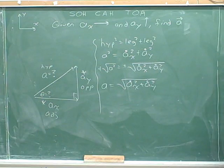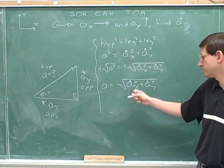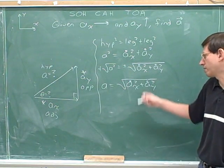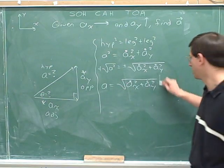So here's an expression for the magnitude of the overall vector, the square root of the magnitude of a sub x squared plus the magnitude of a sub y squared.